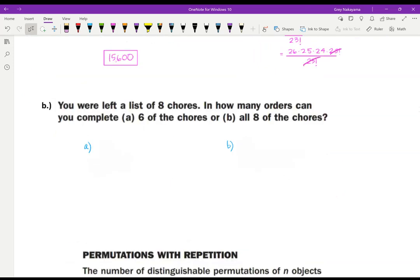Part B, you were left a list of eight chores and how many orders can you complete six of the chores or all eight of the chores? Well, the key word in this problem is how many different orders. So that means it's a permutation. I have eight chores and I want to choose six of them. So find that button, put in 8 NPR 6, and you get an answer of 20,160. What if I want to choose all eight of them? That's going to be 8P8, and that is going to be 40,320.